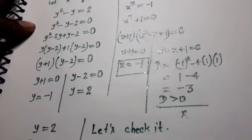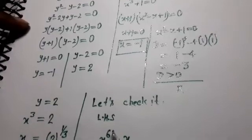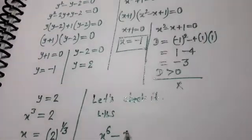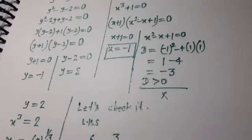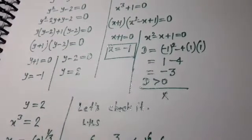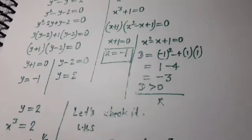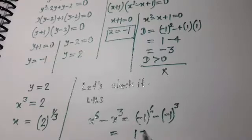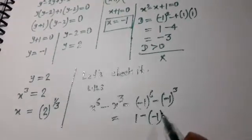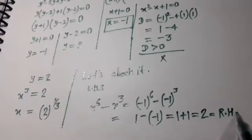Checking the LHS: x to the power 6 minus x cube. For x equal to minus 1: x to the power 6 is (minus 1) power 6 which gives 1, and x cube is (minus 1) power 3 which gives minus 1. So LHS equals 1 minus (minus 1) equals 1 plus 1 equals 2, which equals the RHS.